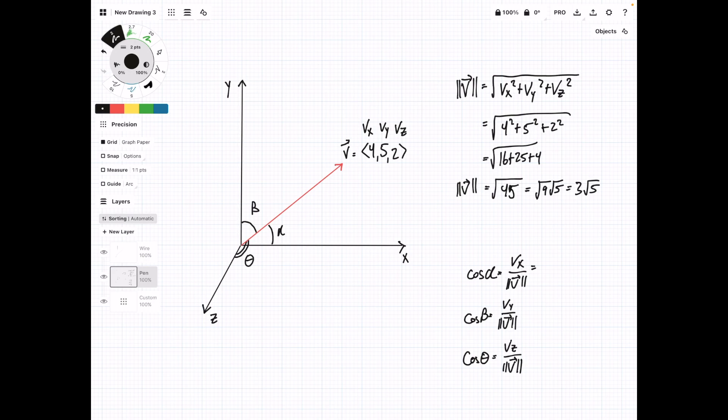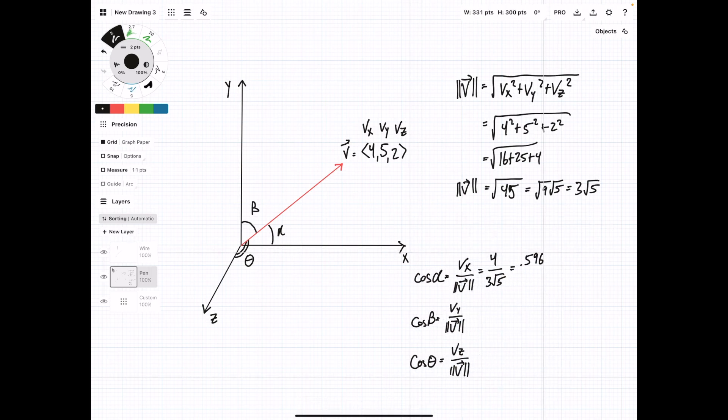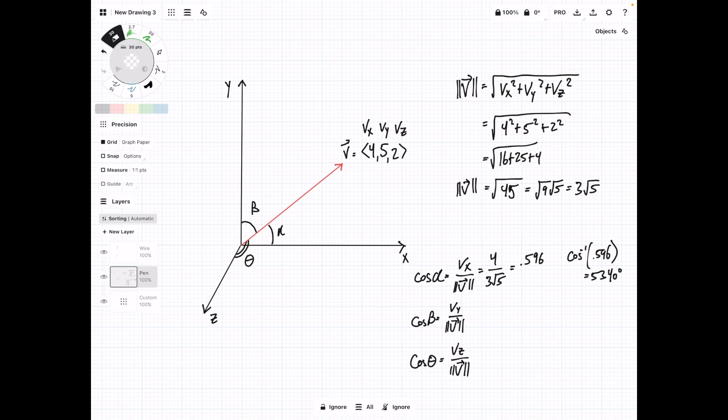Now, let's come down here and plug in our values. So vx is 4, and it's going to be over 3 times the square root of 5. We plug this into a calculator. This becomes 0.596. I'm going to move this over a tiny bit so I can fit in the angle. And then if you do the inverse cosine of 0.596, you get 53.40 degrees. So that's our alpha.